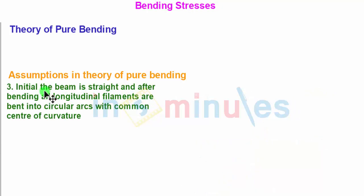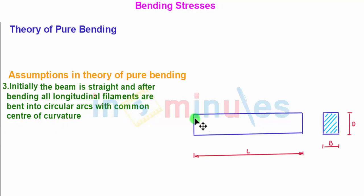Third assumption: initially the beam is straight and after bending all the longitudinal filaments are bent into circular arcs with common center of curvature. If you have this beam where L is the length and B and D are breadth and depth, this is the longitudinal direction.